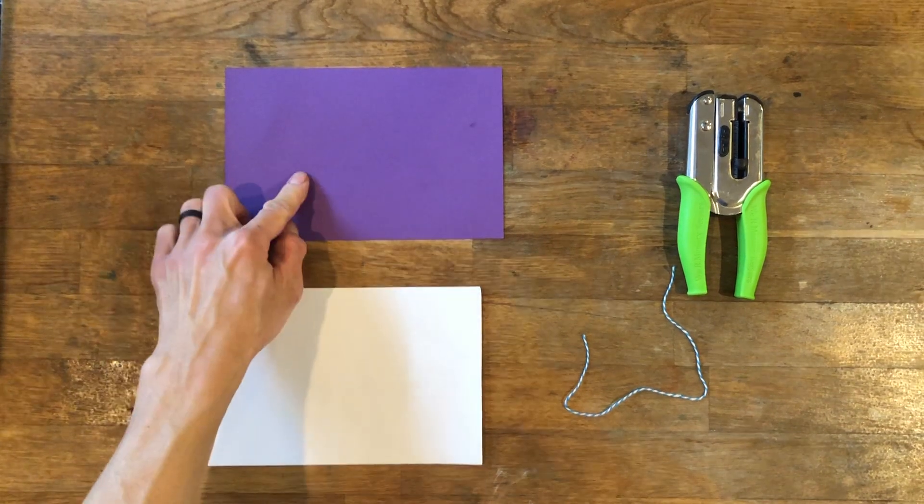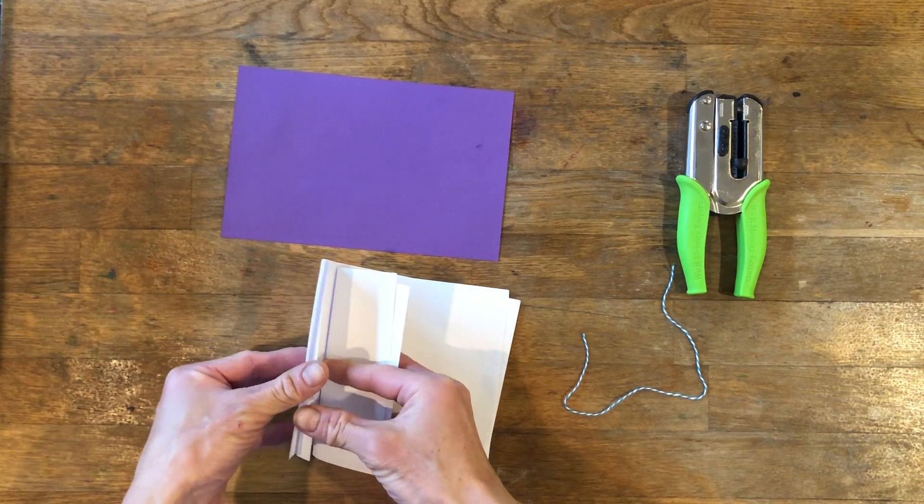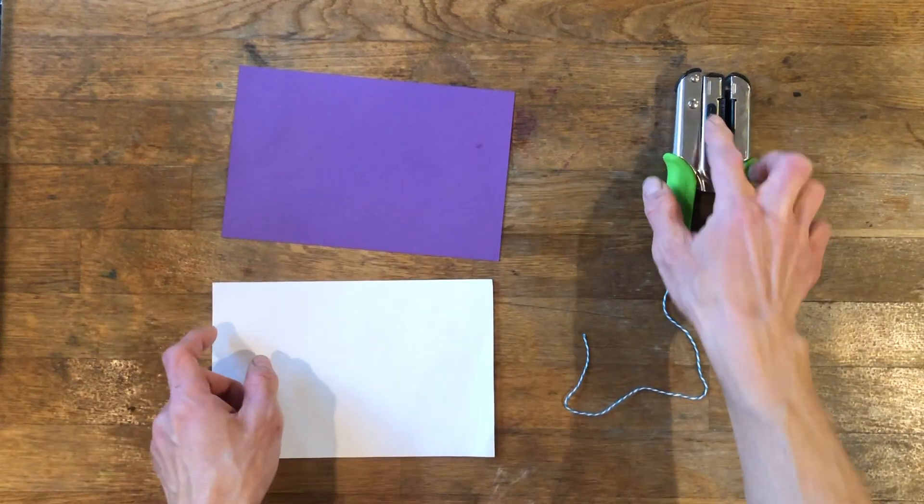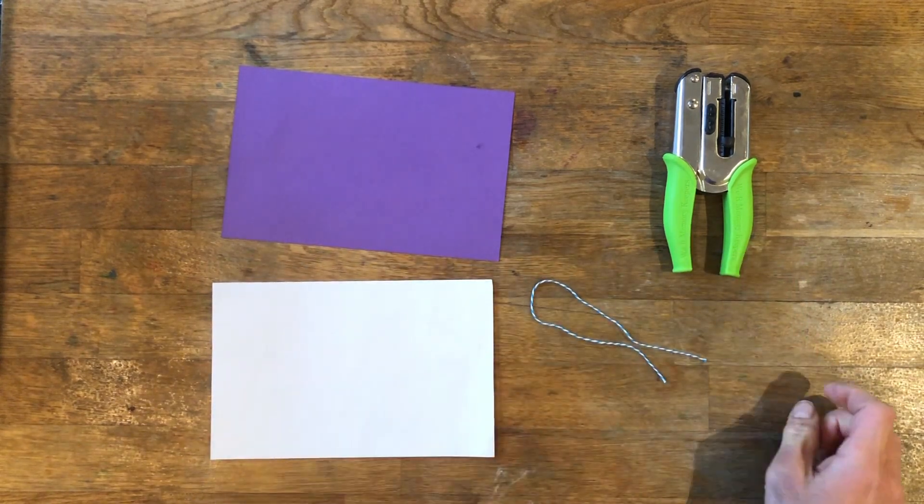For the inside pages, we used five half sheets of copy paper. We used a hole punch and baker string that was cut to 12 inches.